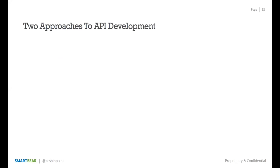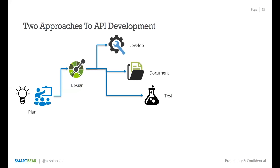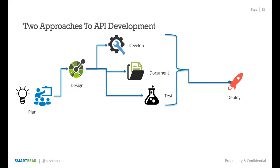There are two approaches to API development. In the design-first approach, you plan your API, then design it — defining what it does — before you develop, document, and test simultaneously, using the definition as a contract aligning all stakeholders. Finally, you deploy. This is called definition-driven development, and it's relatively newer in the REST API ecosystem, with the definition at the center of your entire development and deployment strategy.